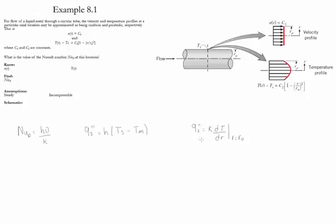So we need to be able to determine the flux and the value of Tm to substitute it to get H and eventually get the Nusselt number.